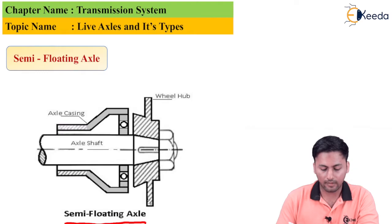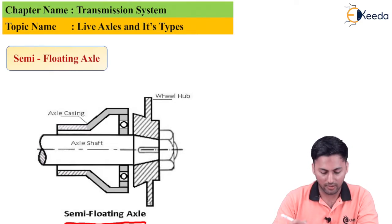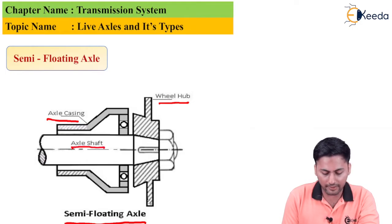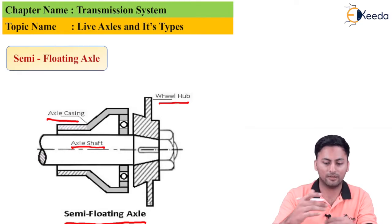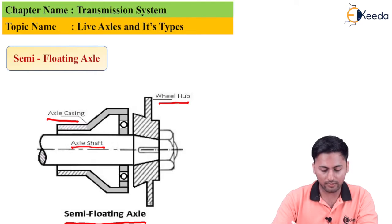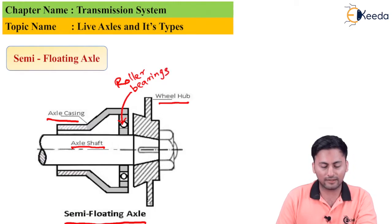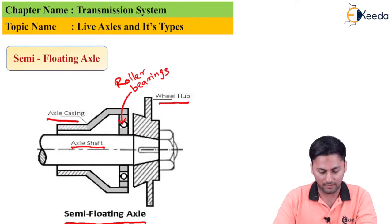Looking at the construction of the semi-floating axle, we can see it consists of a wheel hub, an axle casing, and an axle shaft. The shaft and casing are positioned to cover the entire assembly. There are roller bearings — their function is to protect the rotating parts. The axle casing is enclosed and the semi-floating arrangement is provided.